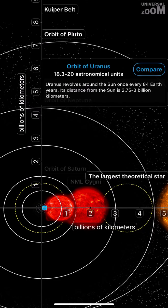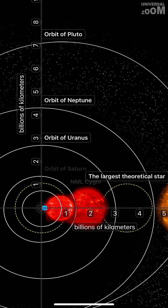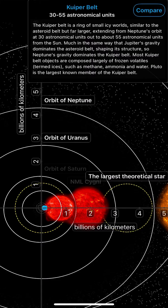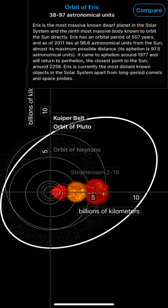Orbit of Uranus, 18.3 to 20 astronomical units. Orbit of Neptune, Orbit of Pluto. Kuiper Belt, 30 to 55 astronomical units. Orbit of Eris, 38 to 97 astronomical units.